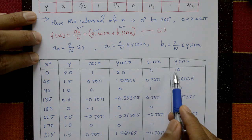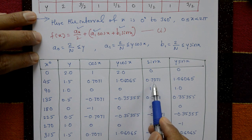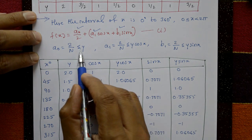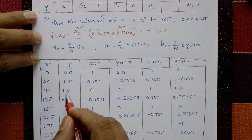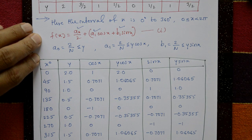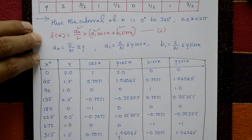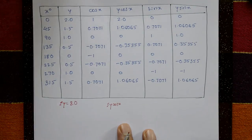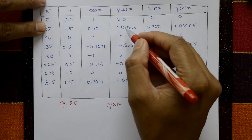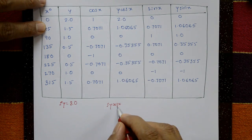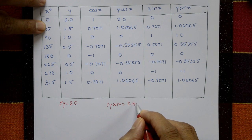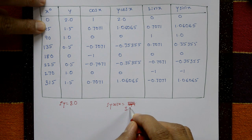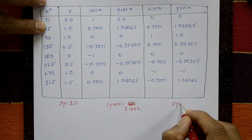For y·sin x: 2.0 × 0 = 0, 1.5 × 0.7071 = 1.06065, and so on for all values. Adding all values: Σy = 8.0, Σ(y·cos x) = 3.4142, and Σ(y·sin x) = 0.4142.